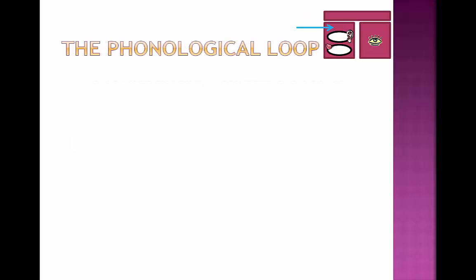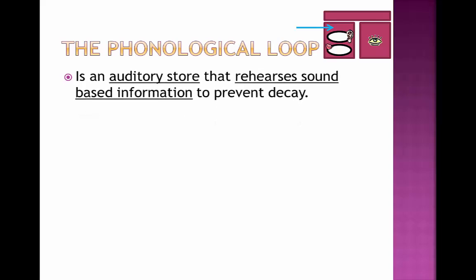Next we'll look at the phonological loop, which is a little more complex. It is an auditory store that rehearses sound-based information to prevent decay. All auditory information is put into the phonological loop where it can be analysed and rehearsed. So if you hear someone say something, it's put into the phonological loop where it is rehearsed, and you can remember what they said for a long time because it's being prevented from decaying.